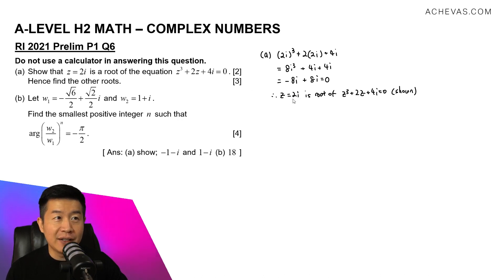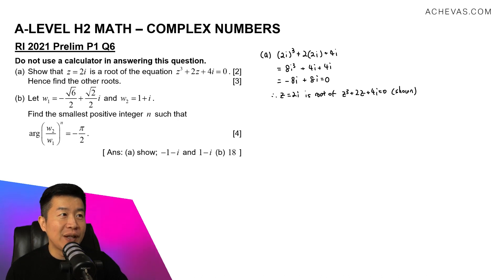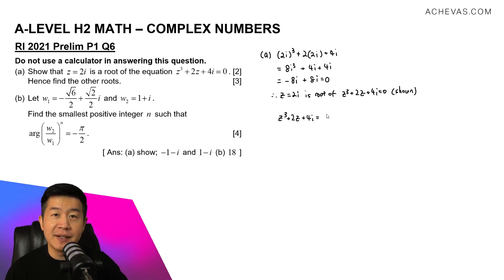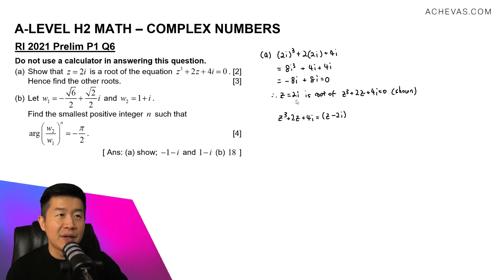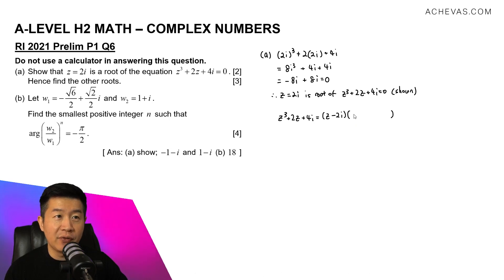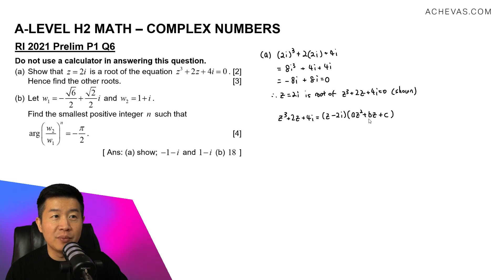By making use of the factor theorem, since 2i is a root, we know that (z − 2i) is a factor. That allows me to re-express z³ + 2z + 4i in terms of this factor. So we write it as (z − 2i) multiplied by a quadratic factor. Since this is a cubic and we have a linear factor, we expect a quadratic factor az² + bz + c.